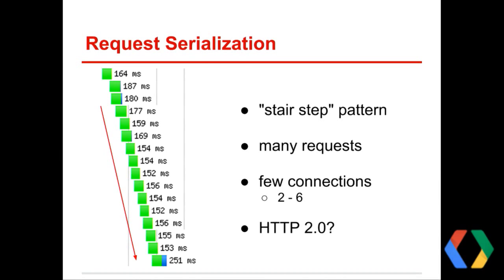Serialization occurs when there are many requests but few connections, typically between two and six. A connection is basically like lanes on a highway — you can fit only so many cars horizontally before traffic starts to pile up bumper-to-bumper. This is an example of bumper-to-bumper traffic, where one request cannot even be started until another one has come back with a response. Looking closely at this waterfall, we can see that requests overlap each other three at a time. That's actually because there was a very large image being loaded above these requests, further holding up the number of connections that could be reused.